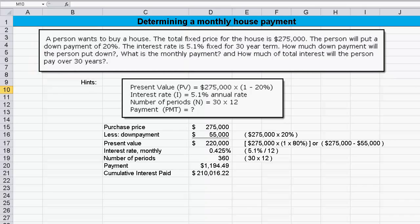A person wants to buy a house. The total fixed price for the house is $275,000. The person will put a down payment of 20%. The interest rate is 5.1% fixed for 30-year term. How much down payment will the person put down? What's the monthly payment? And how much of total interest will the person pay over 30 years?